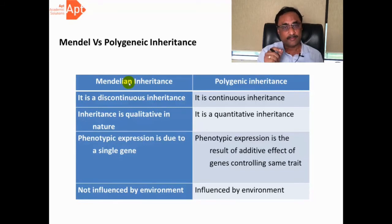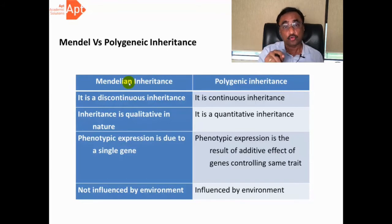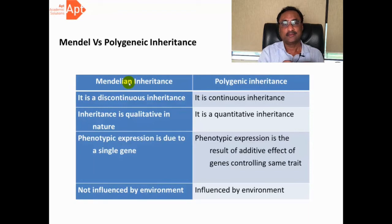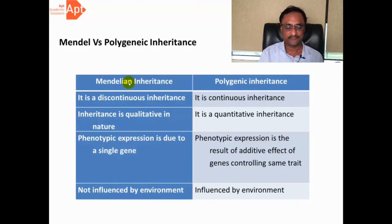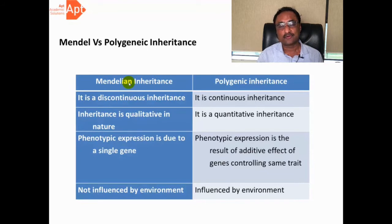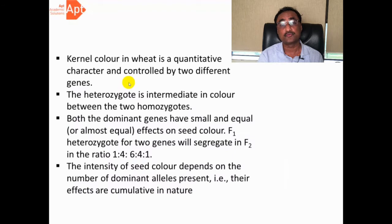Second, Mendelian inheritance is qualitative — it talks about the quality of one particular character. For instance, tall is one quality, dwarf is one quality. But in polygenic inheritance, it is the net combined effect of all the genes. The outcome of the phenotype depends entirely on the contribution of all the dominant genes, so it is quantitative in nature. In Mendelian inheritance, the phenotype is a resultant of a single gene, but here the phenotype is a resultant of more than one gene — that is why we call them polygenes. Also, Mendelian inheritance is not influenced by the environment, but polygenic inheritance definitely is.